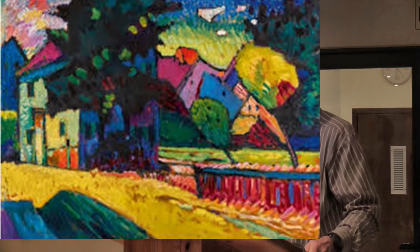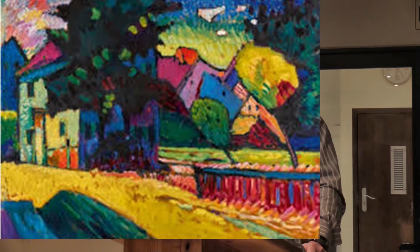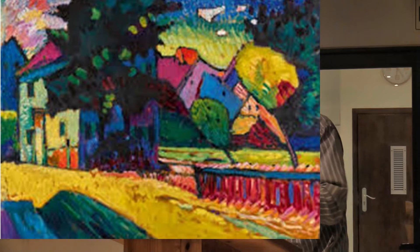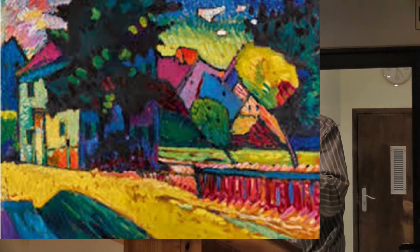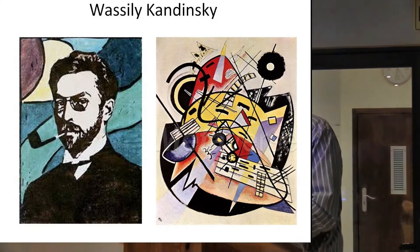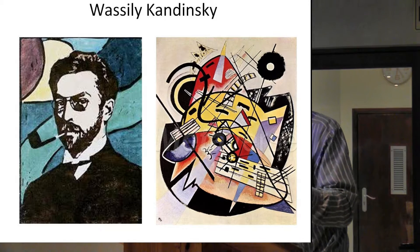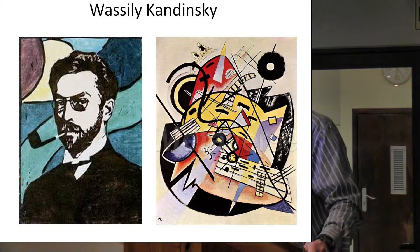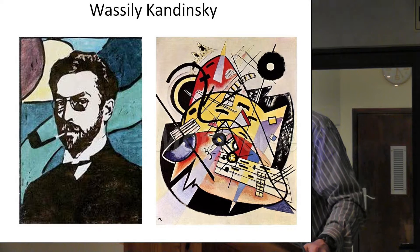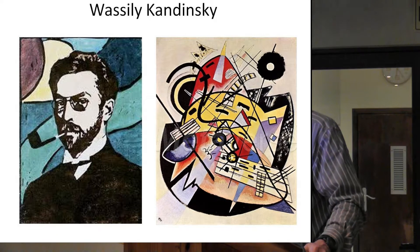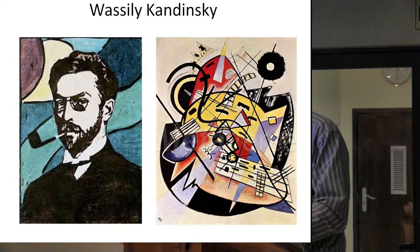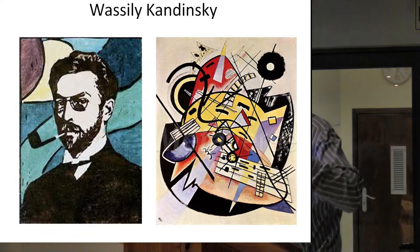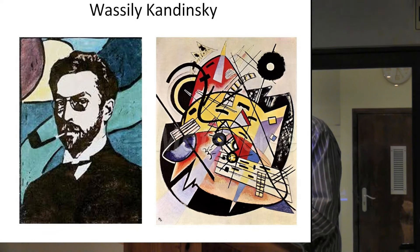Vasily Kandinsky started in Russia and became, to many people, the father of abstract art. This is when he was still in Murnau, painting a scene there with bright, beautiful colours. This is his self-portrait on the left. The painting on the right shows how abstract he had become — it's called The White Dot; you can see the white dot in the top right-hand corner. So these guys were changing all the time in terms of what they saw and thought.